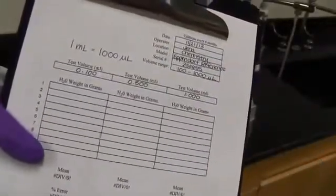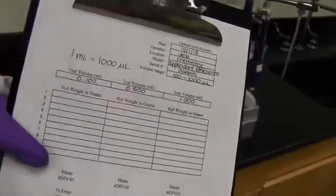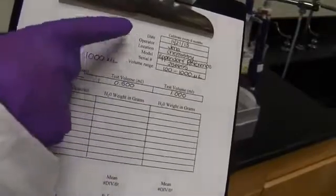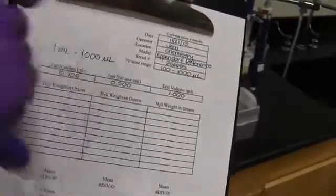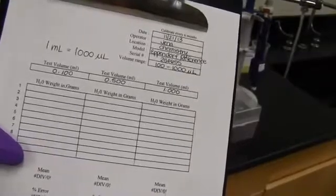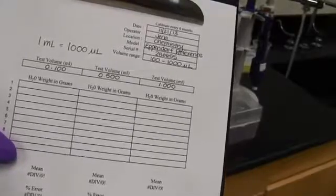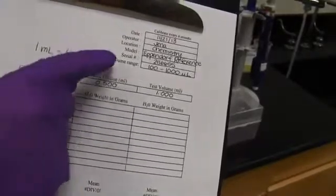Before we start actually taking some measurements, we're going to fill out our form first. Basic things that you'll need is the date, who's doing the calibration, what location the pipetter came from, the model number, which is located on the pipetter. For example, we're doing the Eppendorf reference, the serial number, which is on the top right near the knob, where you change the volume you're showing.